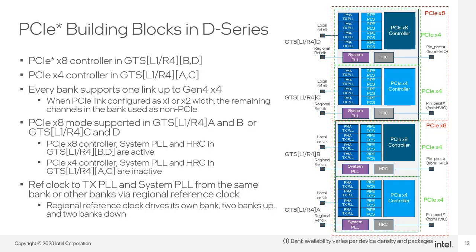D-series devices contain two types of PCIe controllers: by-eight controllers and by-four controllers. While each GTS transceiver bank still only has a single PCIe controller, the type of controller alternates as you move up the device. Bank A at the bottom has a by-four controller; moving up, bank B has a by-eight controller, bank C has a by-four controller, and bank D has a by-eight controller. This means that two banks, such as A and B, can be combined to support a by-eight PCIe link, while banks C and D can be combined to support a by-eight link as well.